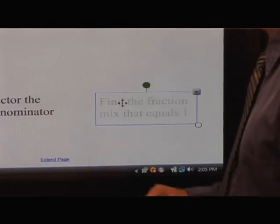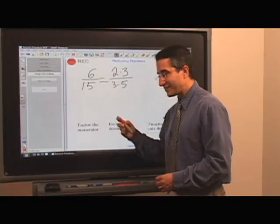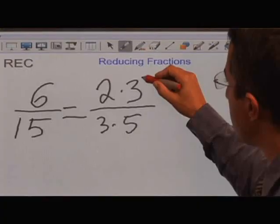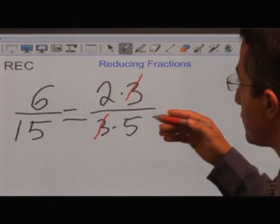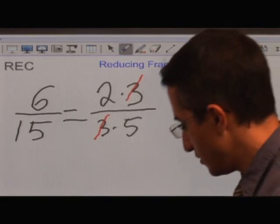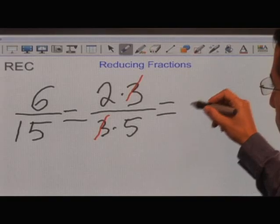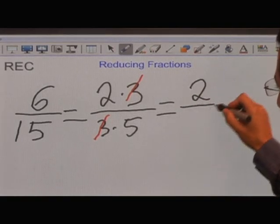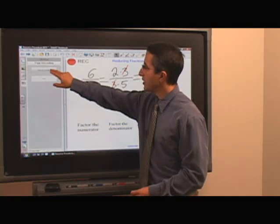The next step is to find the fraction mixed that equals 1. So I'm going to pick up a different color pen and say that 3 and 3 on the numerator and denominator, that equals 1. And then I pick up my black pen, and that equals whatever is left over, in this case happens to be 2 fifths. Put my pen down and stop recording.